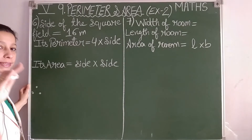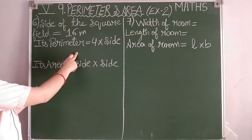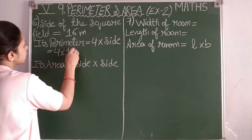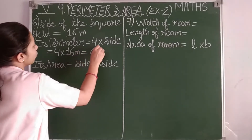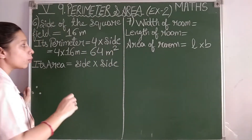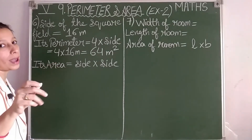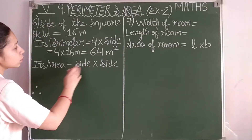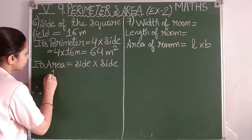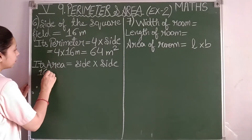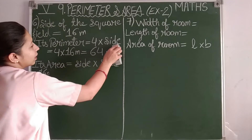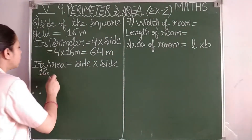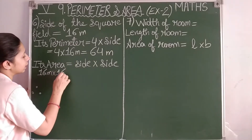We have to find the perimeter and area. Perimeter of a square equals four into side, so four times 16 equals 64 meters. Then for area, it equals side into side, that is 16 meters into 16 meters. Note: perimeter is 64 meters — the square unit written here by mistake belongs to area only.